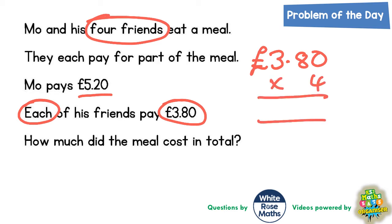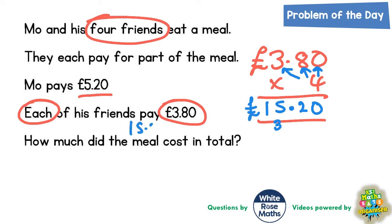We need a quick column method to work that out. Four lots of nothing is nothing, four lots of eight is 32 — put the two in and carry the three — and four lots of three is 12, plus the three carried is 15. So your answer is going to be £15.20. Each of his friends are paying £3.80, so that is a total of £15.20.